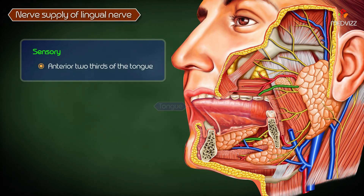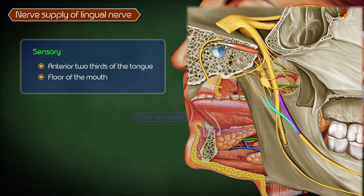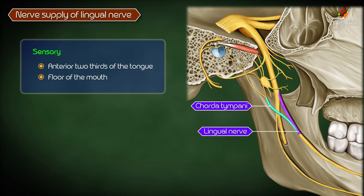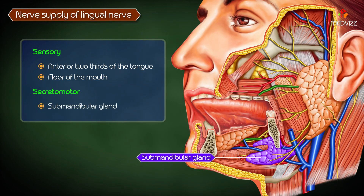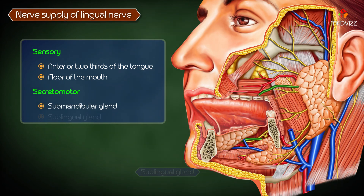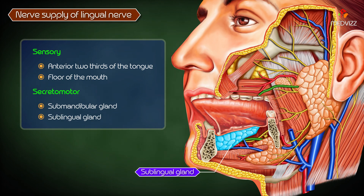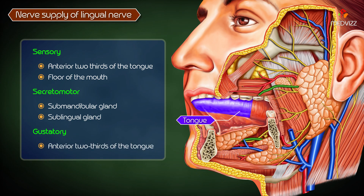The lingual nerve is sensory to the anterior two-thirds of the tongue and to the floor of the mouth. The fibers of the chorda tympani, which is a branch of the facial nerve, are secretomotor to the submandibular and sublingual salivary glands and gustatory to the anterior two-thirds of the tongue, and are also distributed through the lingual nerve.